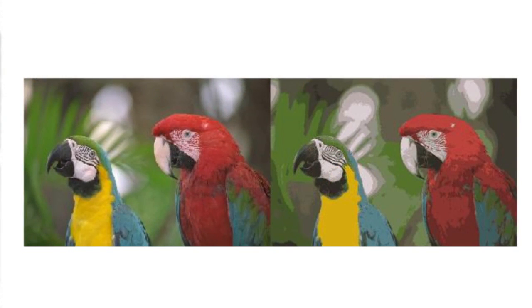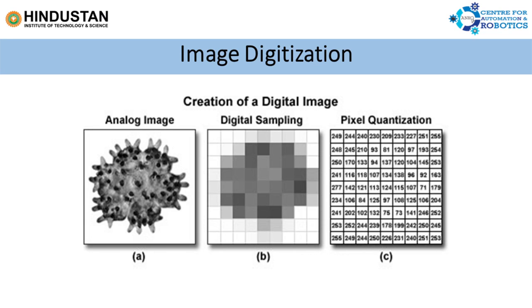Looking at the image on the right-hand side, the first image has a 10-bit representation of colors, giving a nice distribution of colors. Whereas on the right-hand side with only 6-bit representation, colors are not widely distributed — minimum number of colors — so the quality is very low with low quantization. On the whole, when creating a digital image: the analog image is sampled, then pixel quantization is performed, and the output of pixel quantization is a digital image. The next stage in machine vision is pre-processing.